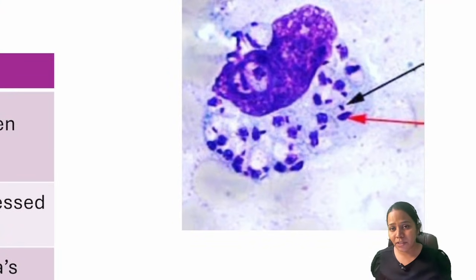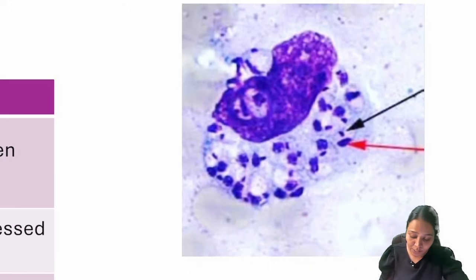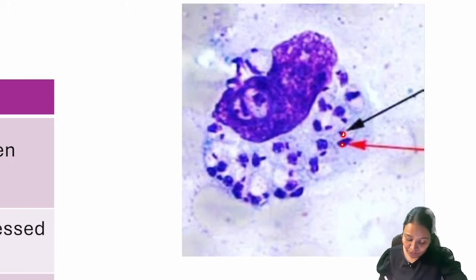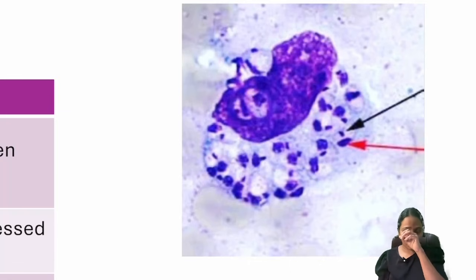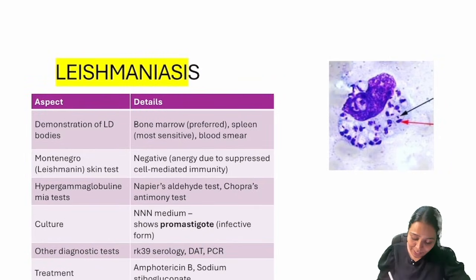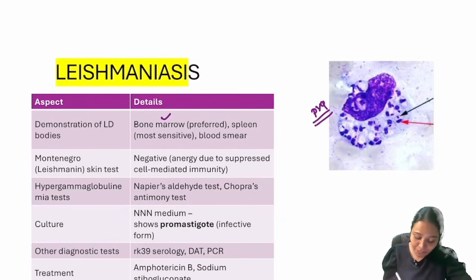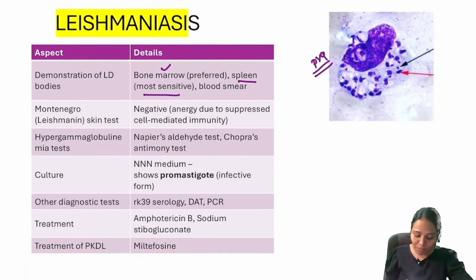The most repeated image from leishmaniasis shows a macrophage — the large cell — with two smaller structures inside: a nucleus and a kinetoplast. These are parts of the amastigote, i.e., the LD body. This image is asked very frequently. For diagnosis, bone marrow biopsy is most preferred; spleen is most sensitive but avoided due to bleeding risk. LD bodies can also be demonstrated in blood smear.